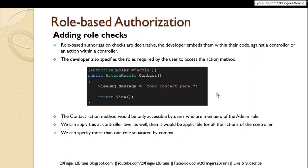We can apply this at the controller level as well, in which case it would be applicable for all actions of the controller. We can also specify more than one role separated by comma. If you have another role and want users with that role to access the Contact page, just specify it comma-separated with admin. In that case, the user should have one of those roles to access Contact.